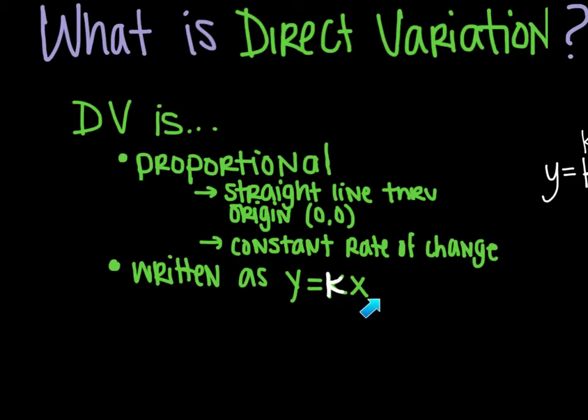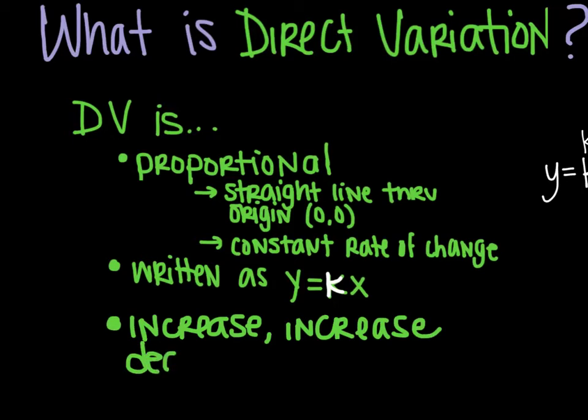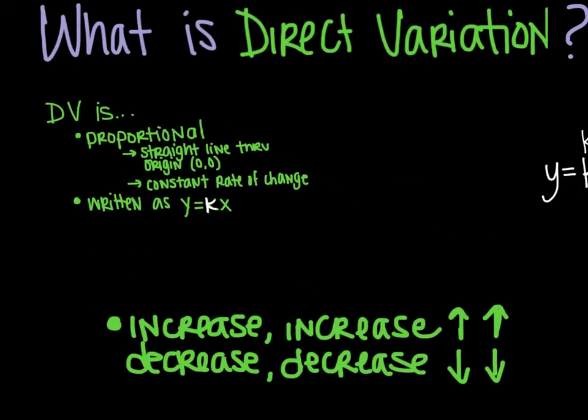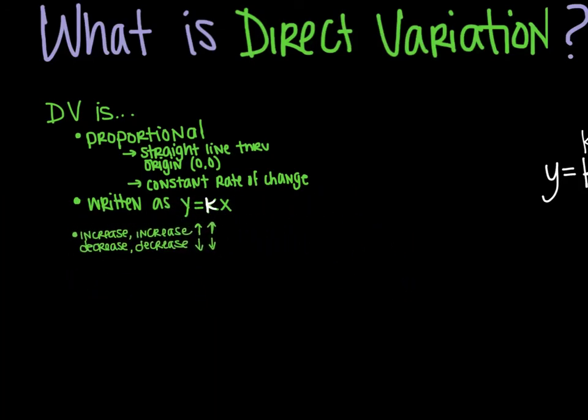The second thing you need to know is it is written as y equals k times x, and we will talk more about k in just a second. The last thing that you need to know is that direct variation is an increase increase or a decrease decrease. In other words, as one thing increases, whatever else is there increases. For example, if you are talking about the hours you work, as your hours increase, the more your pay increases.